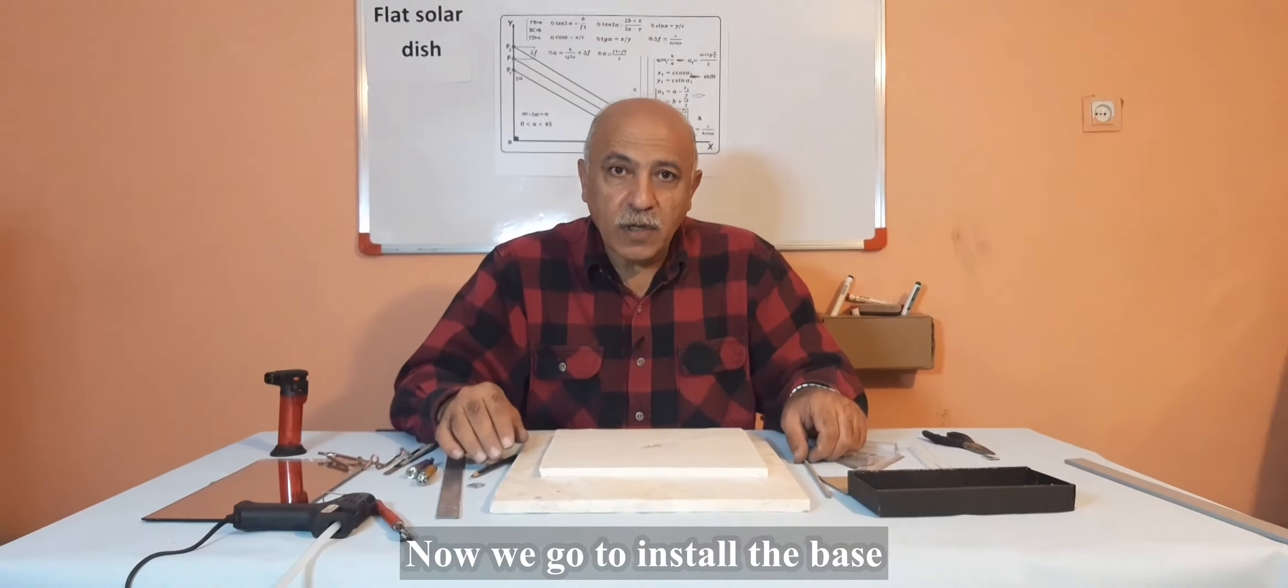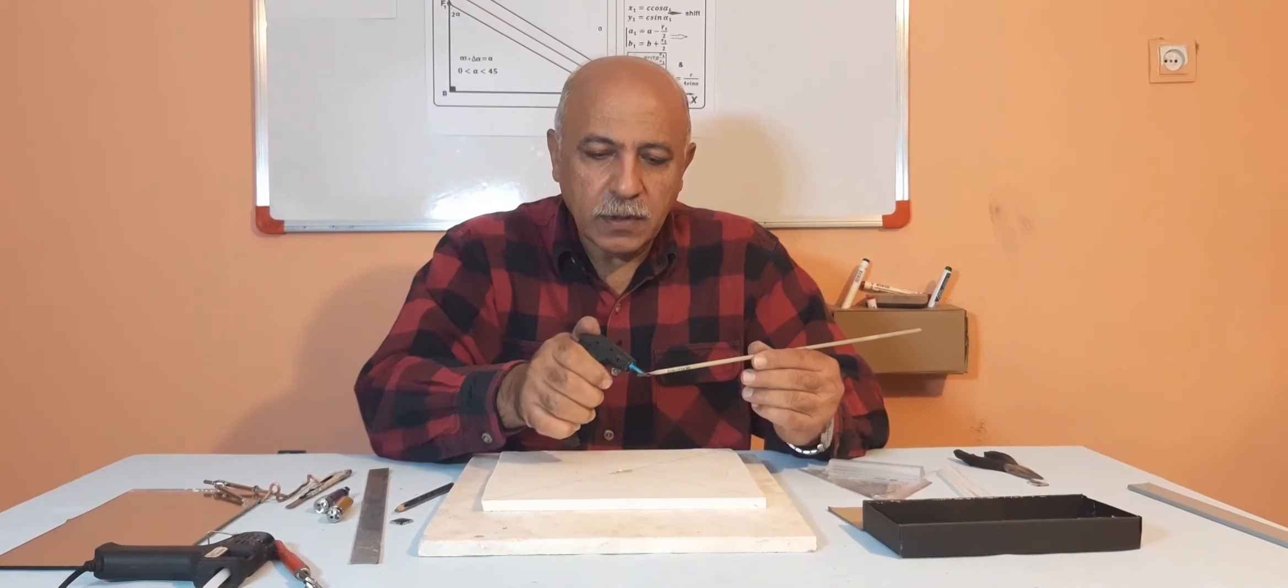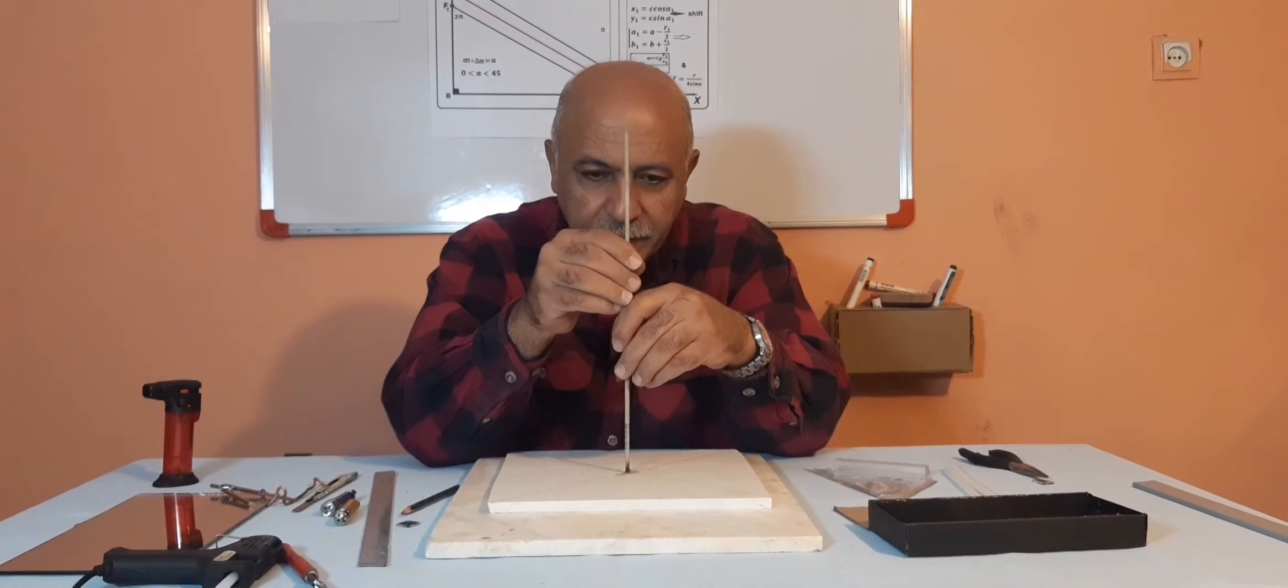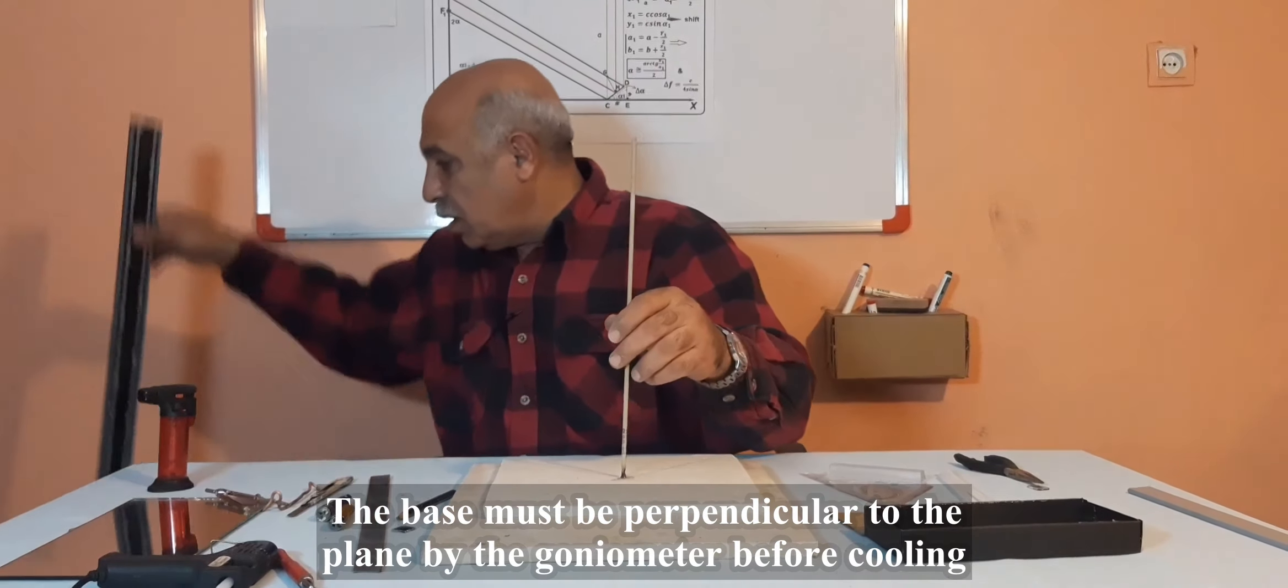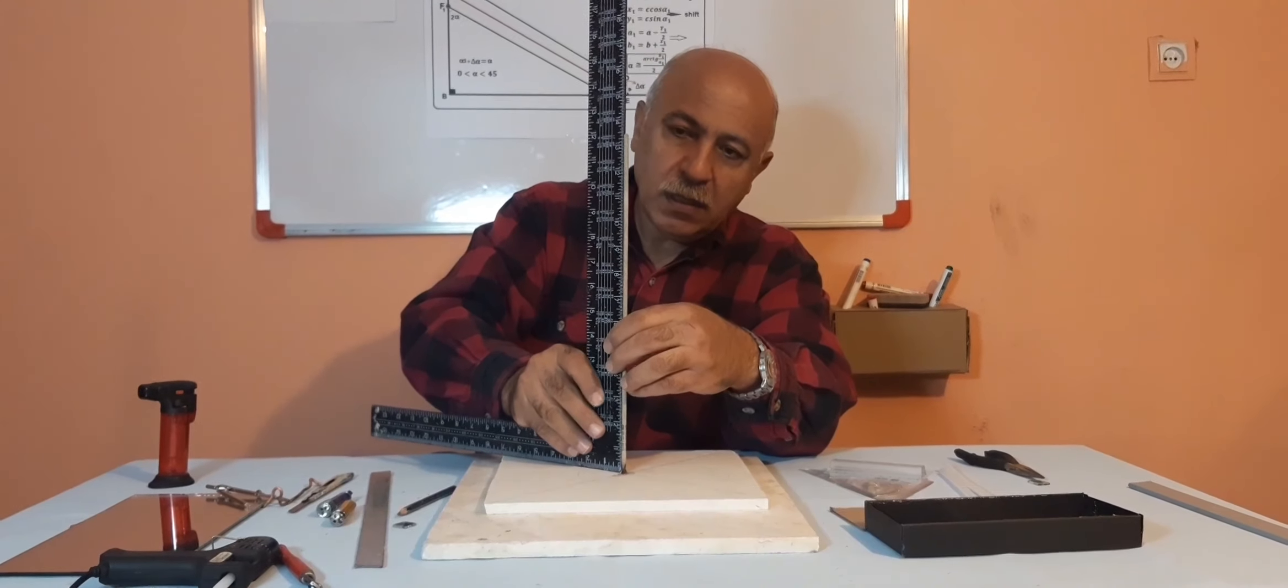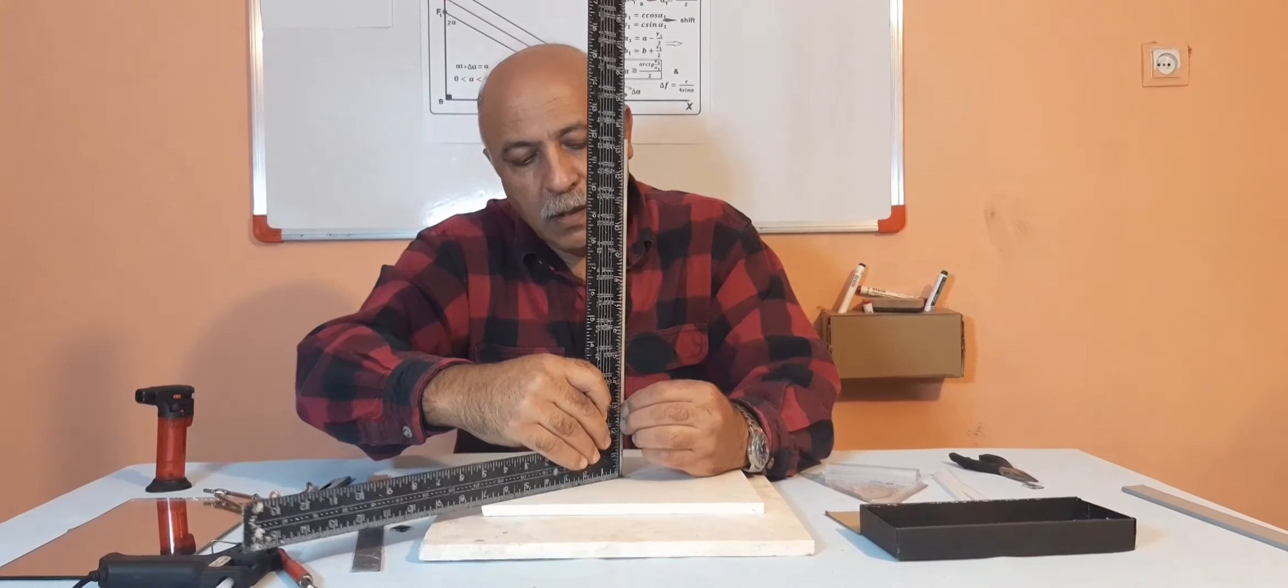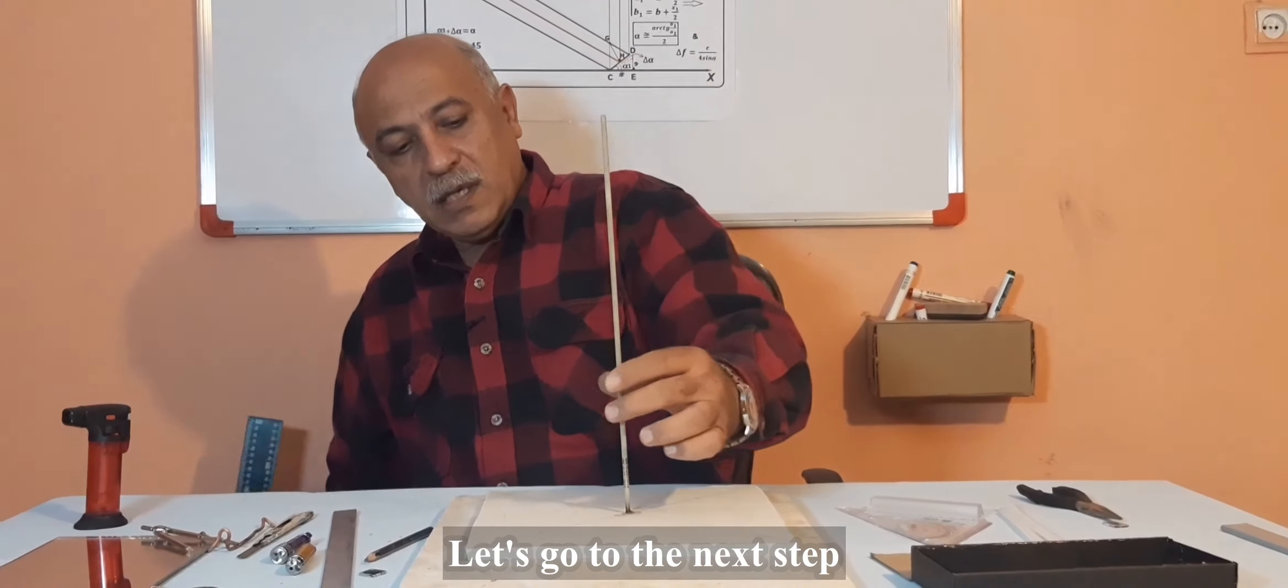Now I'll install the base. I use a welding wire to install the base and first we heat it up, then place it in the center of the compressed foam. The base must be perpendicular to the plate, and this must be done by a goniometer from both sides. Now the base is set.